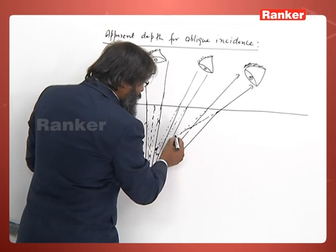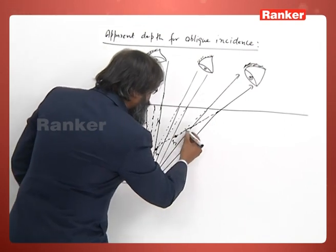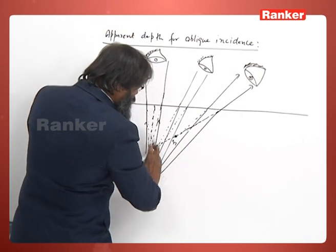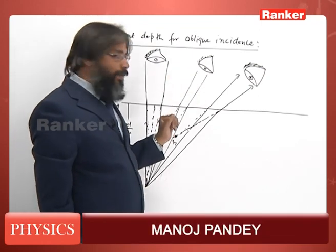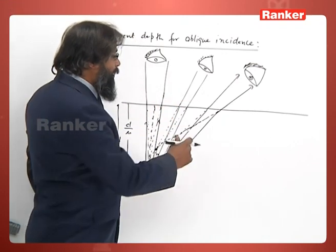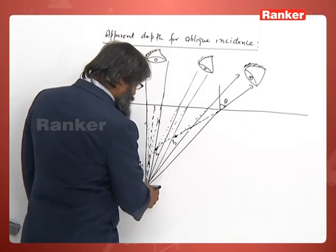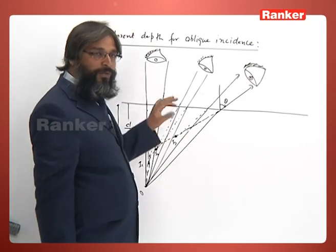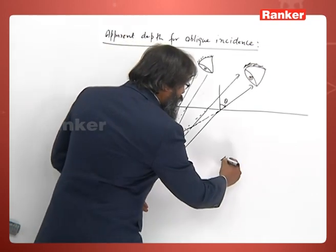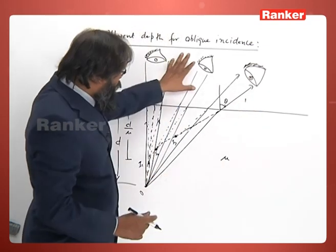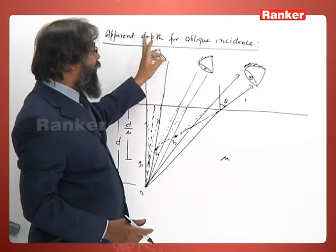As the viewing angle increases further, the image shifts even more — both upward and laterally. The curve along which the image shifts describes apparent depth for oblique incidence. After a few classes, I will mathematically calculate the coordinates of the image if the angle of view is θ. For now, this qualitative description covers oblique incidence. Next, we consider the case where the observer is in water looking at an object in air — apparent height for normal incidence.